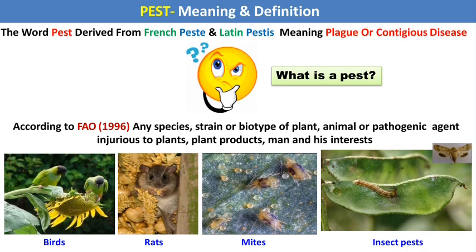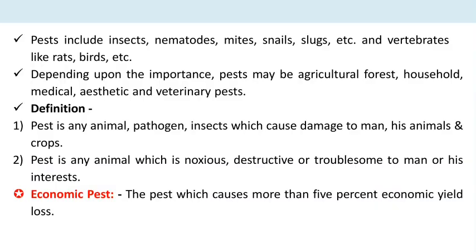In the field, birds, rats, mites and insects act as pests. Pests also include nematodes, mites, snails, slugs, etc., and vertebrates like rats and birds.